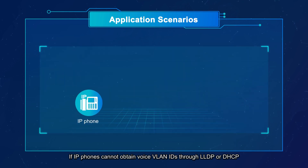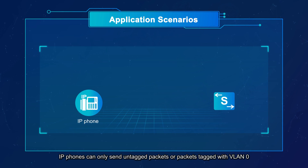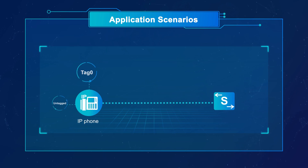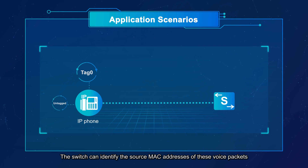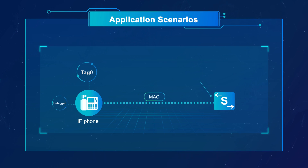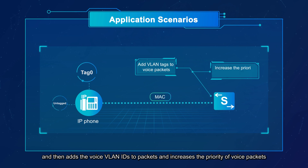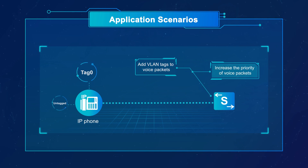If IP phones cannot obtain voice VLAN IDs through LLDP or DHCP, they can only send untagged packets or packets tagged with VLAN 0. The switch can identify the source MAC addresses of these voice packets, then adds the voice VLAN IDs to the packets and increases the priority of voice packets.